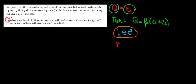Let's work on part B. Suppose now that the effort is verifiable and the workers can agree on the levels of effort if they decide to work together. What is going to be the effort level, income, and utility if they work together? Under what condition will they do so?